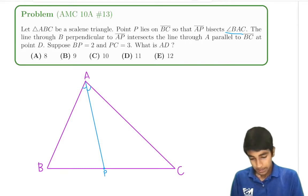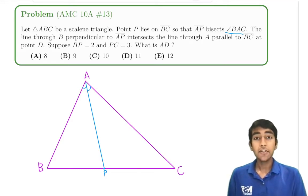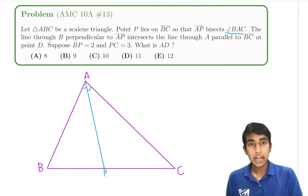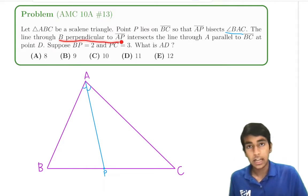The line through B perpendicular to AP intersects the line through A parallel to BC. So what is the line through B perpendicular to AP?